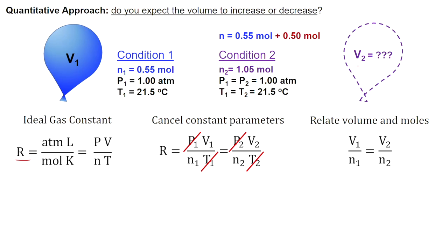We need to rearrange this equation for V2, the volume after an additional amount of helium moles was added. Did you get it? V2 equals V1 times N2 over N1.